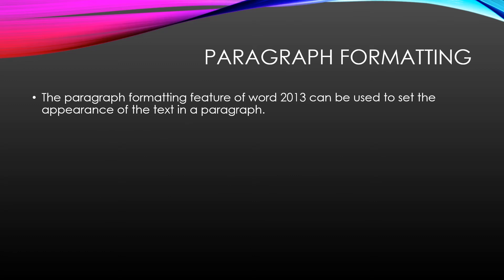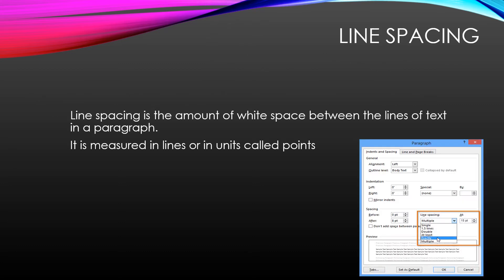Paragraph formatting. The paragraph formatting feature of Word 2013 can be used to set the appearance of text in a paragraph. For paragraph formatting, first of all, we should know what is line spacing. Line spacing is the amount of white space between the lines of text in a paragraph. It is measured in lines or in units called points.